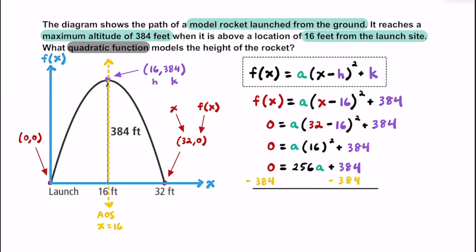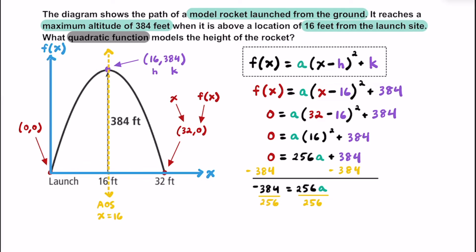Next, let's subtract 384 from both sides. On the left side we get negative 384, and on the right side we have 256a. Then we divide both sides by 256, and we find that the value for a is going to be negative 1.5. That makes sense because we do have a parabola that has been flipped across the x-axis, or flipped vertically.